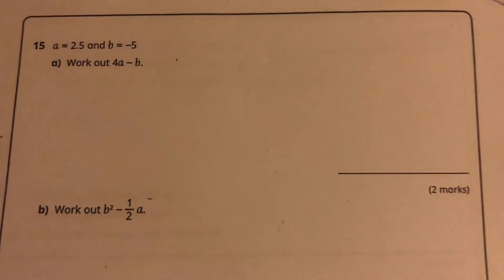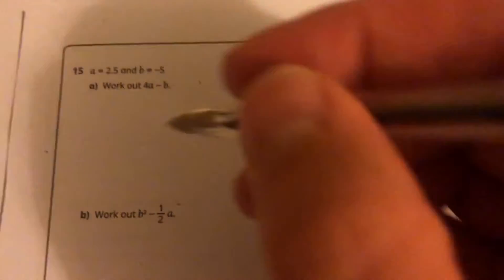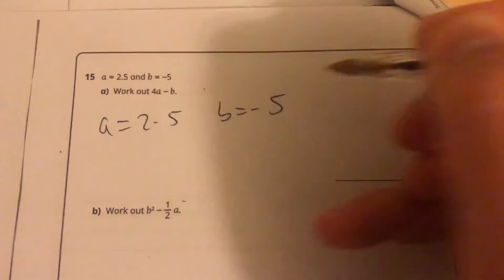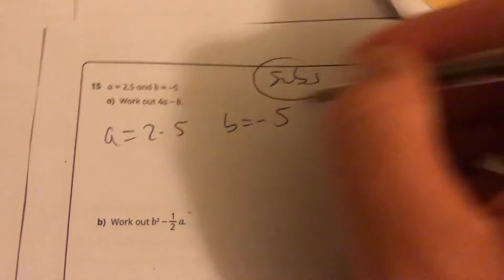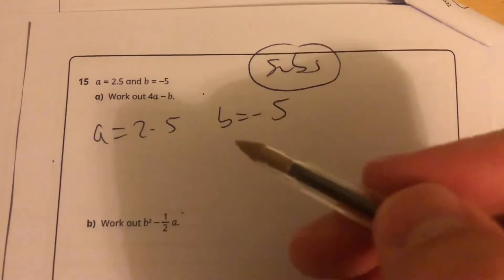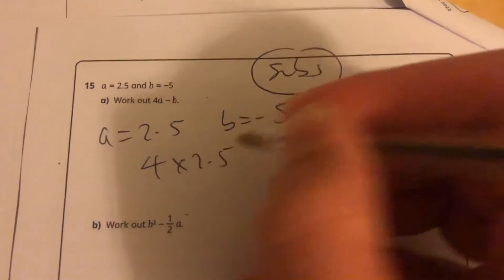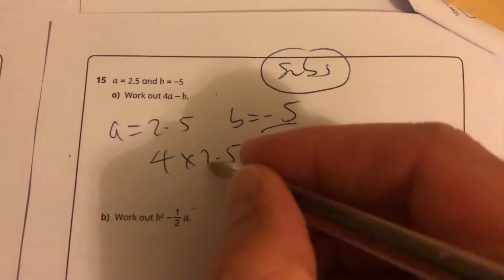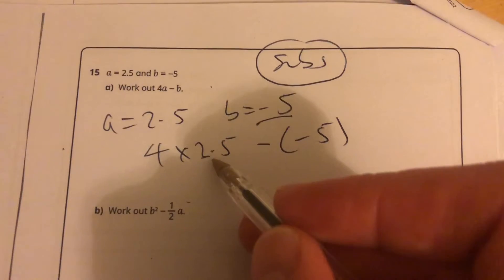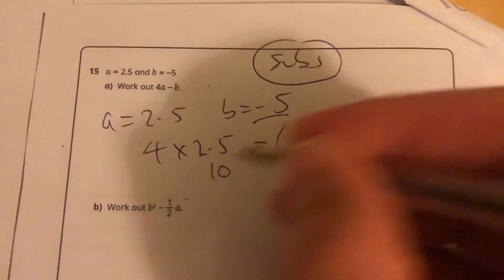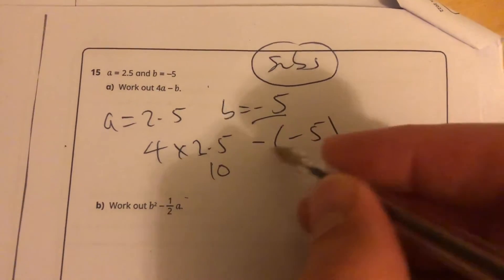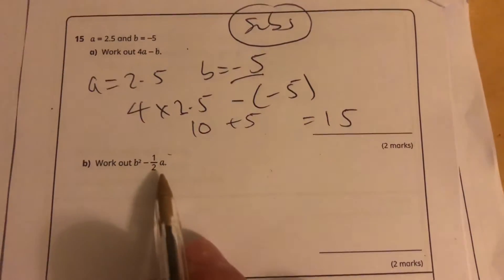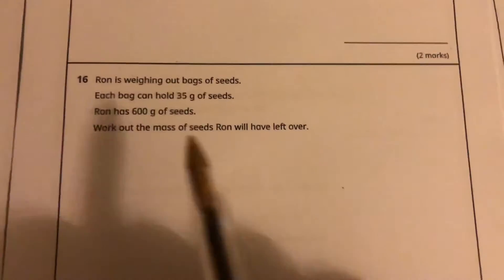Two mark question. A is 2.5, B equals minus 5. Substitution here is the skill we need. Work out 4A minus B. So 4 times 2.5 minus minus 5. Watch your negatives there. 4 times 2.5, or double 2.5 is 5, so 4 times 2.5 will be 10. Minus and minus only in this case will be plus. I'm going to get 15. That one looks a little bit trickier. I'm going to move on. That's a lot of words. I'll come back to it later.